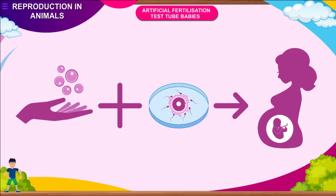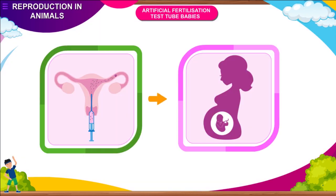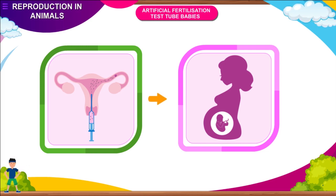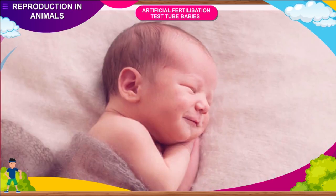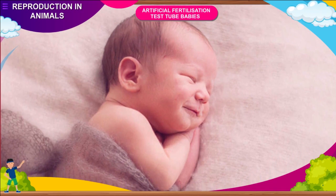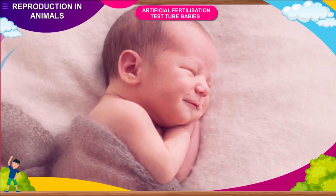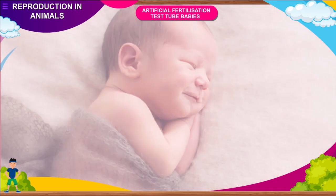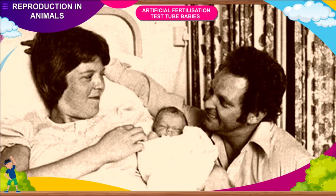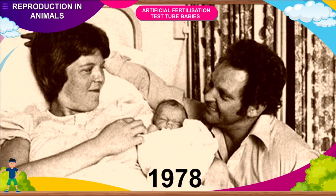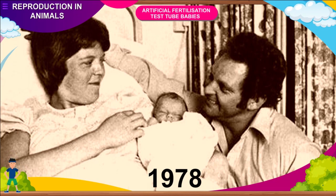In case fertilization occurs, the zygote is allowed to develop for about a week. The zygote is then placed in the uterus of the mother. The embryo gets implanted and develops into a baby in about 9 months. Babies born through this technique are called test tube babies. This technique is quite useful when natural fertilization fails. It was first introduced successfully in humans in 1978.